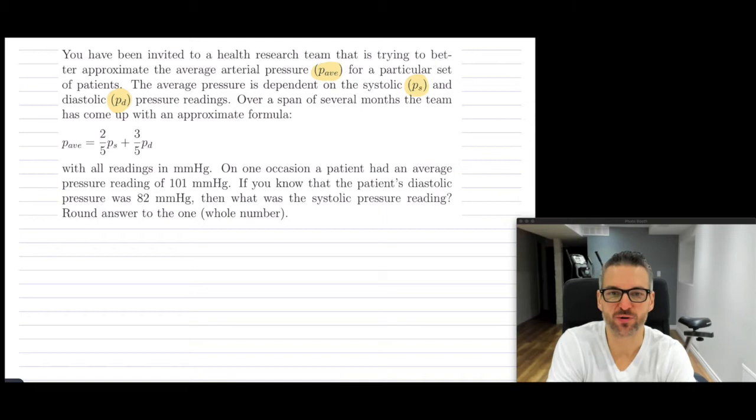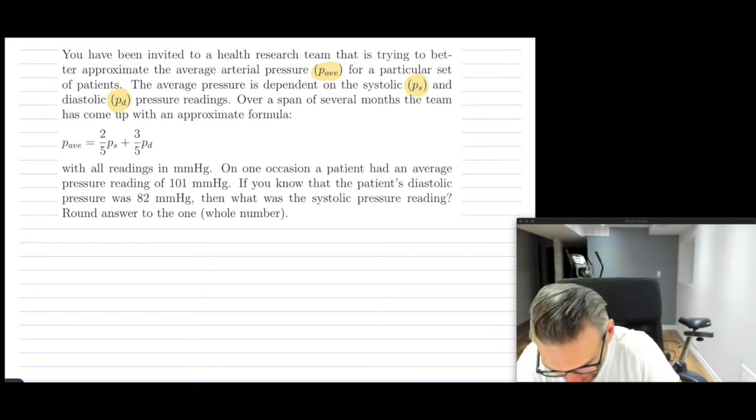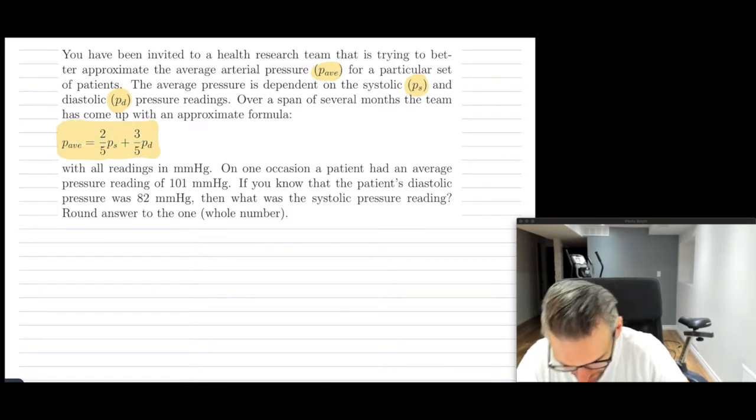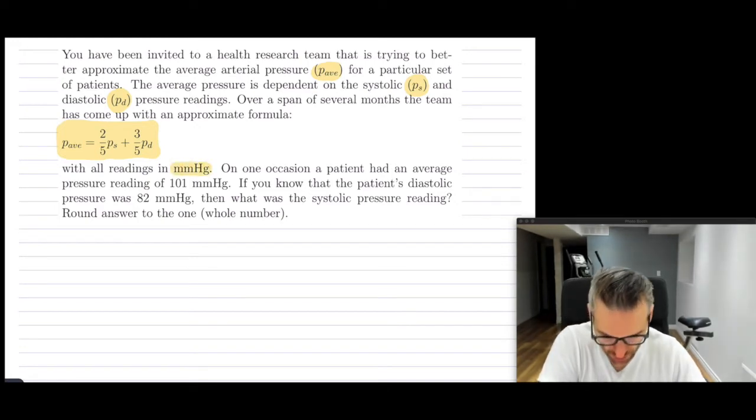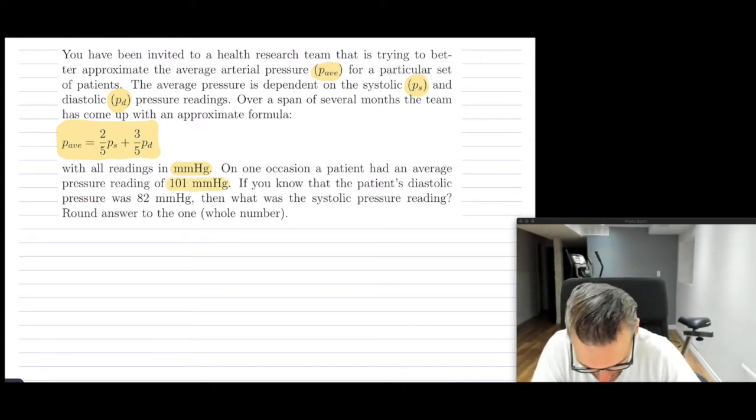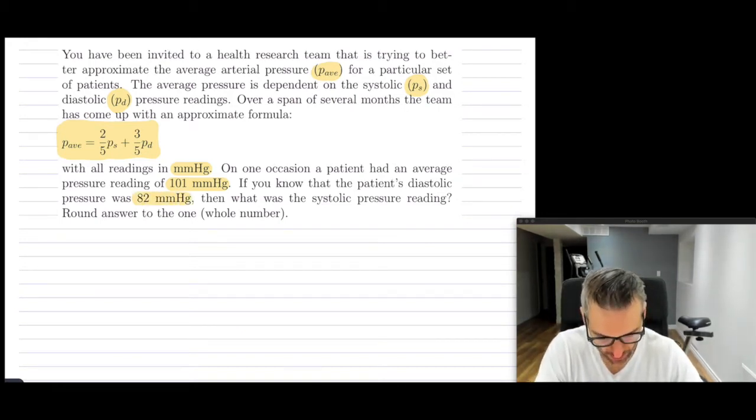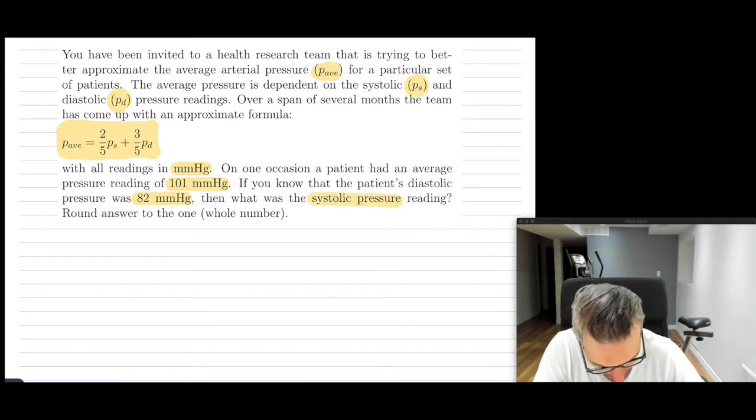Over a span of several months, the team has come up with an approximate formula. So here it is, this particular formula for our average pressure. All the readings are in millimeters of mercury. On one occasion, a patient had an average pressure reading of 101. If you know that the patient's diastolic is 82 millimeters of mercury, then what was the systolic pressure? So it looks like we're going to be looking for PS.